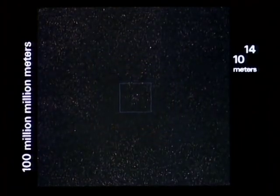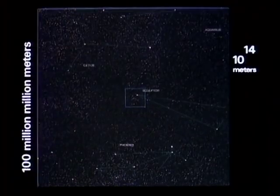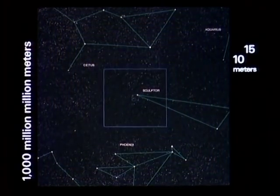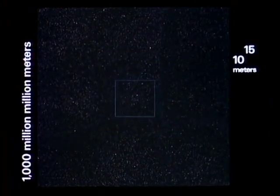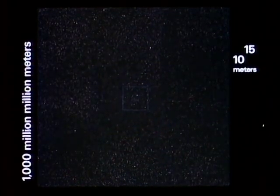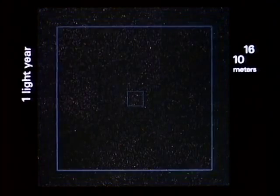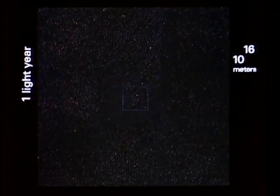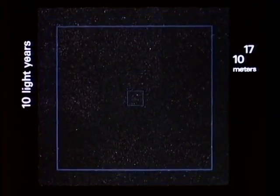Looking back from here we know four southern constellations still much as they appear from the far side of the earth. This square is 10 to the 16th meters, one light year, not yet out to the next star. Our last 10 second step took us 10 light years further. The next will be a hundred.